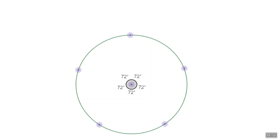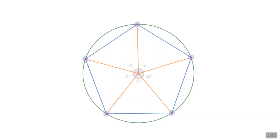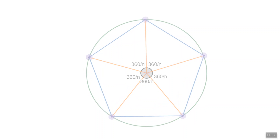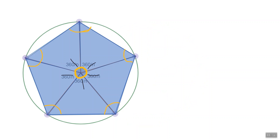You now have five equal arcs and five points equally spaced along the circumference of the circle. Continuing with our pentagon example, we can connect the points to form a regular pentagon. Notice that we can now split our pentagon into five isosceles triangles. All the triangles are congruent, and their vertex angle — the angle at the center of the pentagon — measures 72 degrees. Generalizing this, we can split any regular n-gon into n isosceles triangles with vertex angles equal to 360/n degrees.